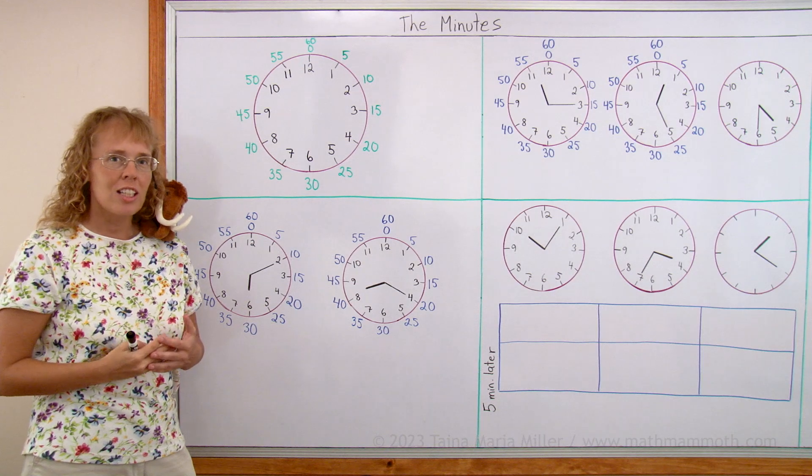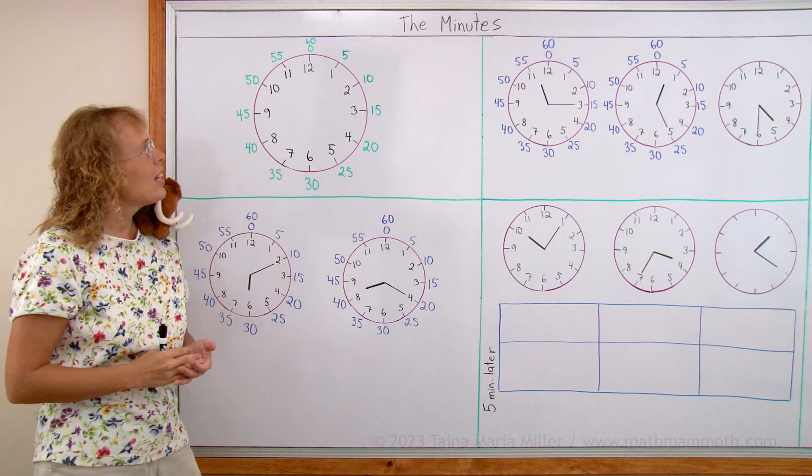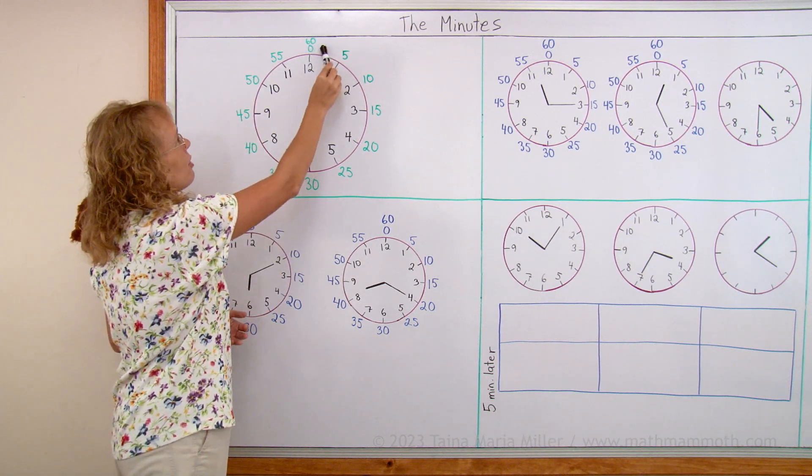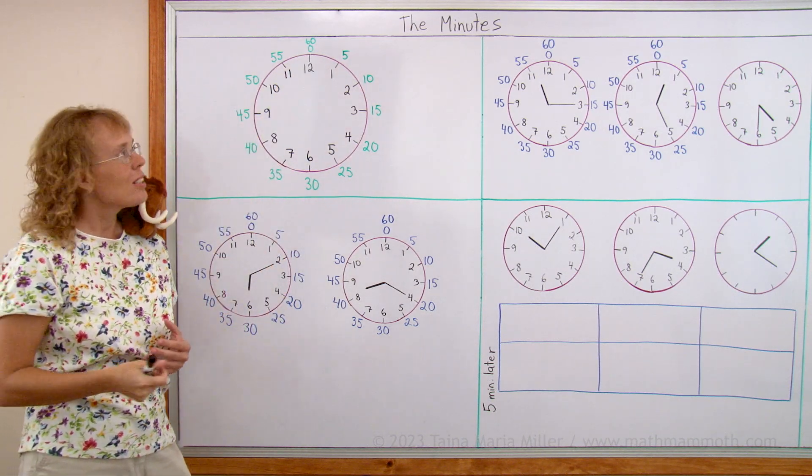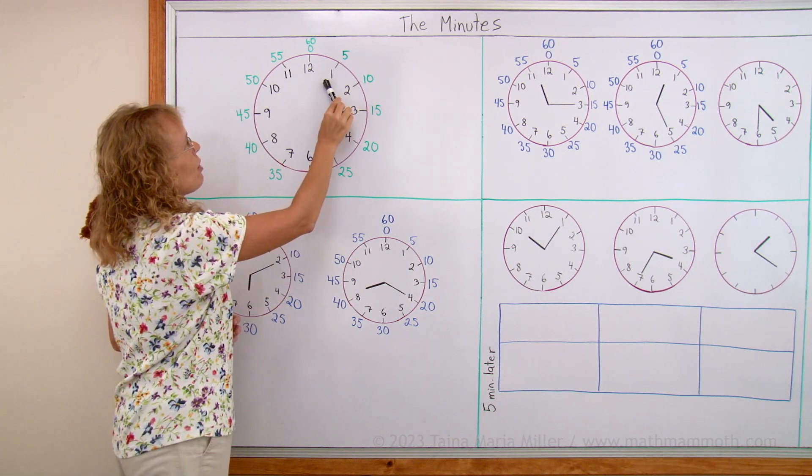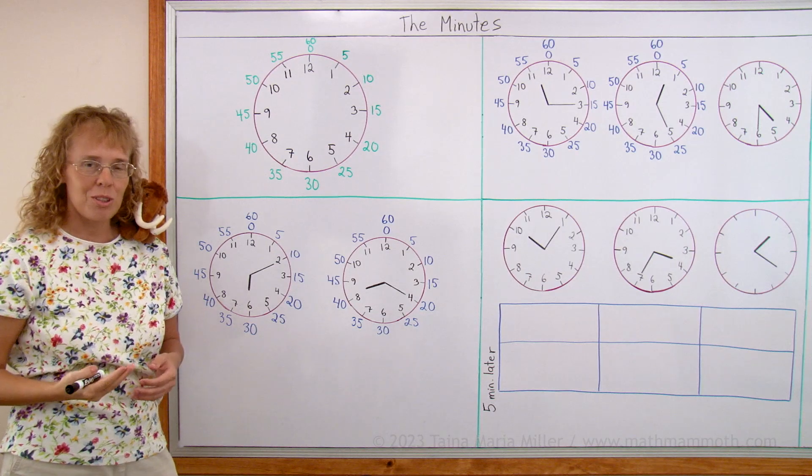And then it has another set of numbers over here and these are for the minute hand. You see, in normal clocks these numbers for the minute hand are not shown. You have to know them. And they go from 0 all the way up to 60. And so for each number on the hour hand we are going to count by 5s for the numbers for the minute hand.